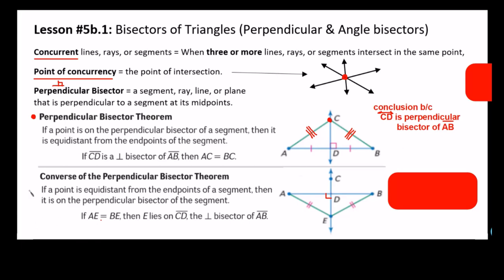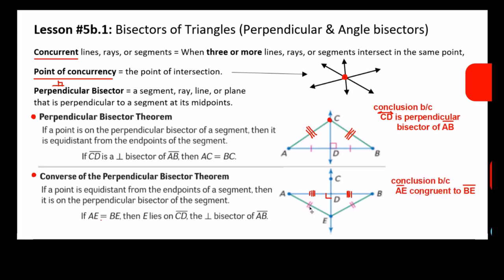Now let's talk about the converse. The converse, if you remember, is when you switch the hypothesis with the conclusion. So basically, if I have a point that is equidistant to the endpoints of a segment — I know that this distance is the same as this — then this point, if I were to draw a perpendicular line going through this point and perpendicular to the segment, this line would cut the segment right in the middle. Because I know that these two are the same and I have a 90-degree angle, these two are the same.